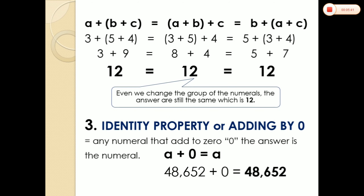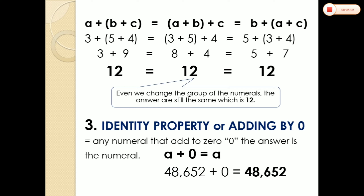And lastly, we have number 3. In number 3, we call this one identity property or adding by 0. Identity property or adding by 0 means any numeral that is added to 0, the answer is the numeral itself. Note that numeral and number are the same — we commonly use the word number. So it looks like this: A plus 0 equals A, or 48,652 plus 0 equals 48,652.